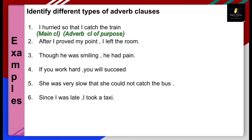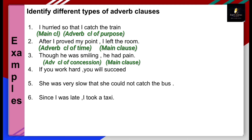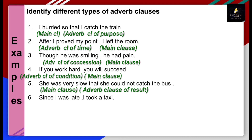Example: 'After I proved my point, I left the room.' When did I leave the room? After I proved my point — adverb clause of time. 'I left the room' is your main clause. 'Though he was smiling, he had pain.' 'He had pain' is the main clause. 'Though he was smiling' — though, although, even though — these show adverb clause of concession. 'If you work hard, you will succeed.' The condition is shown, so 'if you work hard' is adverb clause of condition. 'Because she was very slow, she could not catch the bus.' 'She could not catch the bus' is the result — adverb clause of result.